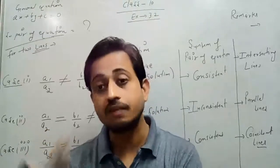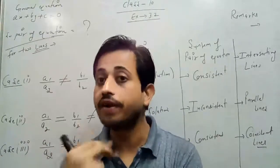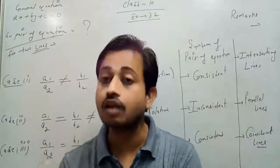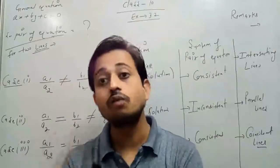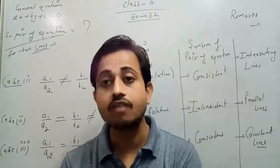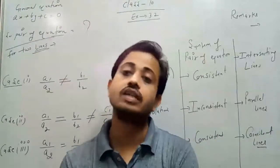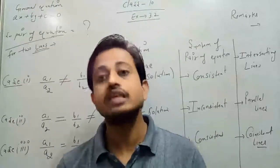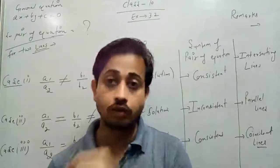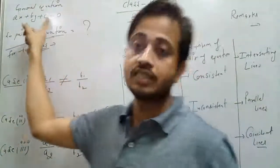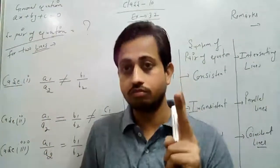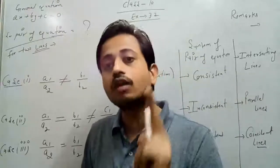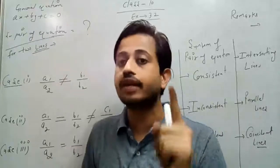Now we have to use algebraic terms to find out whether lines are intersecting, parallel, or coincident without plotting graphically. It is an easy method. We are using a pair of linear equations because that is the name of the chapter. That is why I am taking two linear equations.